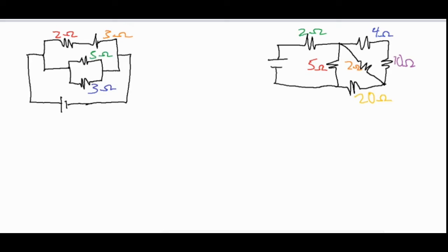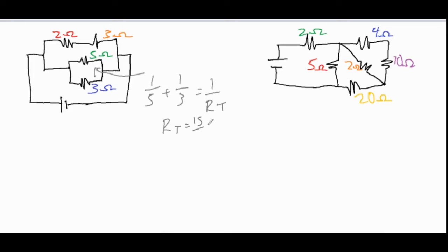That parallel chunk is the five and three ohm resistors in green and blue. Taking that chunk out, we use the same method as before: one over five plus one over three equals one over R_T. We already found this resistance earlier — R_T equals 15 over 8, or 1.875 ohms.